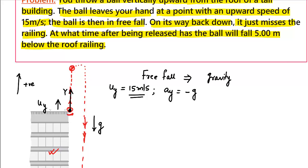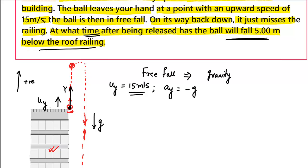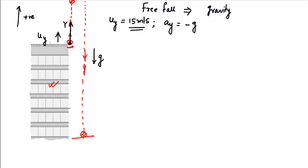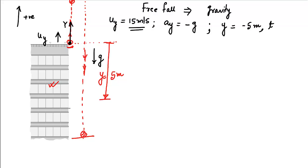We have to find the time after which the ball falls 5 meters below the roof railing. The roof railing is the origin, and the ball is 5 meters below it, so the y-value is negative. Therefore y equals minus 5 meters. We need to find the time when y equals minus 5 meters.